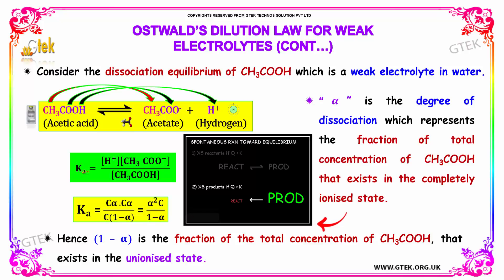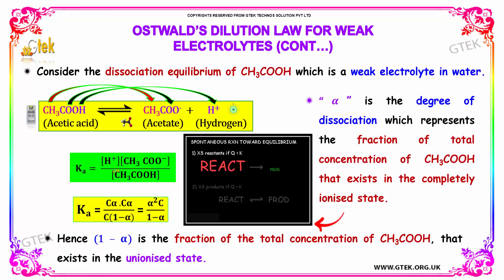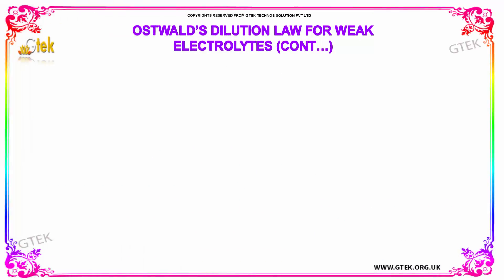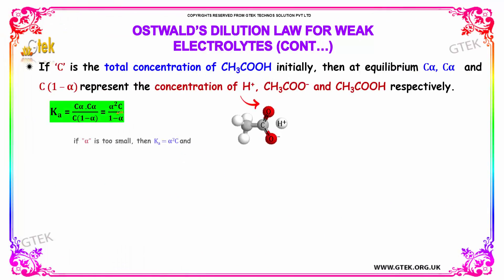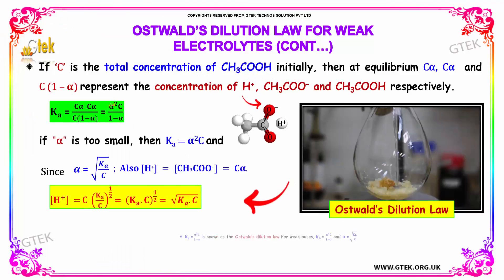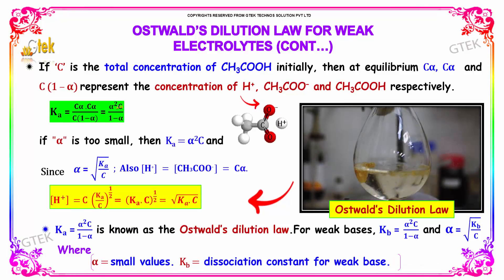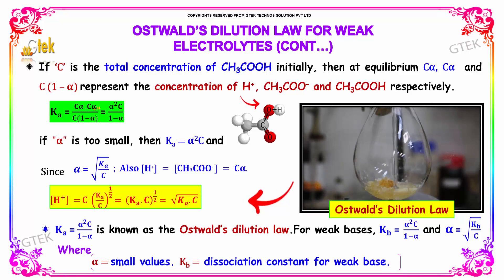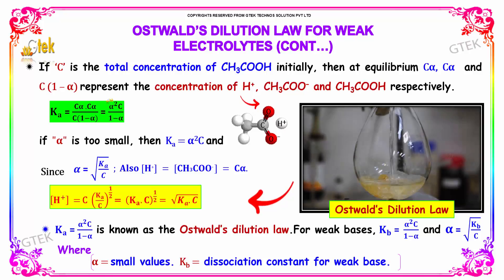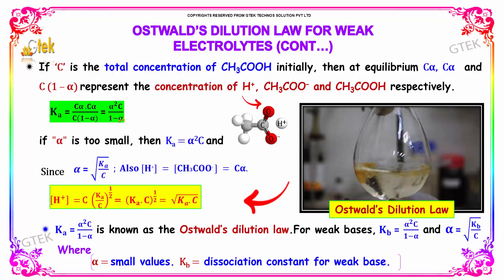Ka is equal to the product of H⁺ and Acetate Ion concentrations divided by the reactant concentration. If C is the total initial concentration of Acetic Acid, then at equilibrium the concentrations of H⁺ and Acetate Ion are both C·alpha, and the concentration of undissociated Acetic Acid is C(1 - alpha).